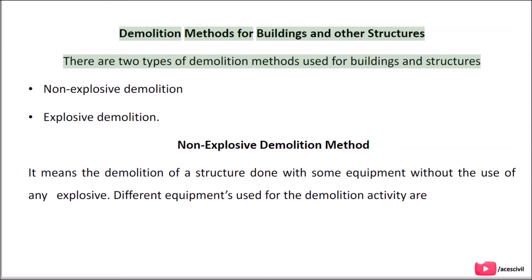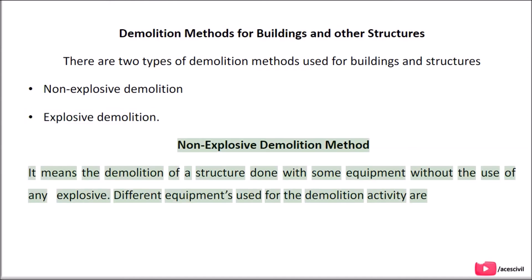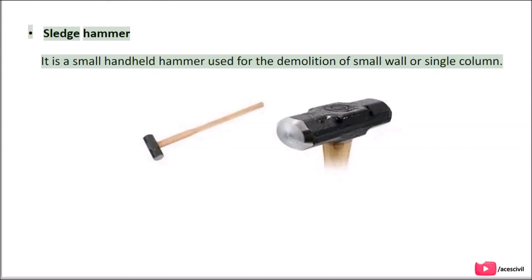Demolition methods for buildings and other structures: There are two types of demolition methods — Non-explosive demolition and Explosive demolition. Non-explosive demolition means demolition of a structure using equipment without the use of any explosives. One such equipment is the sledgehammer, which is a small handheld hammer used for the demolition of small walls or single columns.